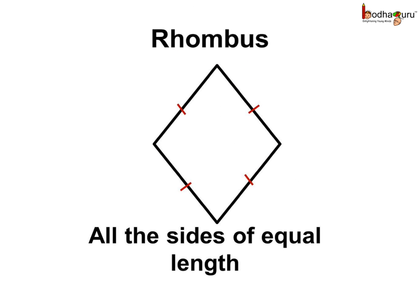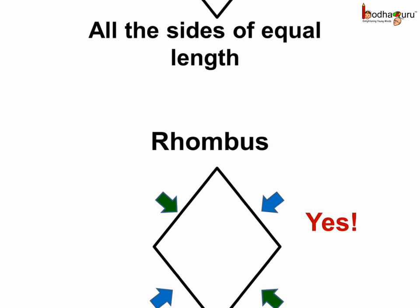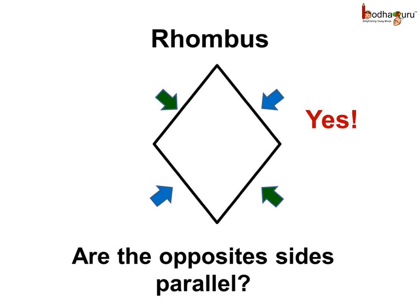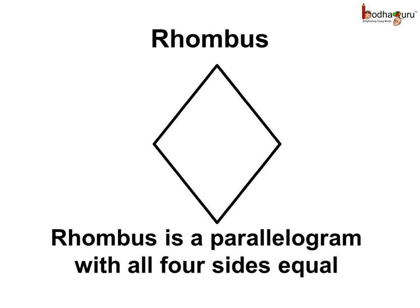Here, we have a different type of quadrilateral which has all the sides of equal length. It is called a rhombus. So, rhombus is a four-sided close figure with all the sides of equal length. Let us see if this quadrilateral is a parallelogram or not. Are the opposite sides parallel? Yes, they are. The sides pointed by the green-colored arrow are parallel, and the other opposite pair pointed by the blue-colored arrows are also parallel. So, both the pairs of opposite sides are parallel in a rhombus. Hence, we can say a rhombus is a parallelogram with all the four sides equal.